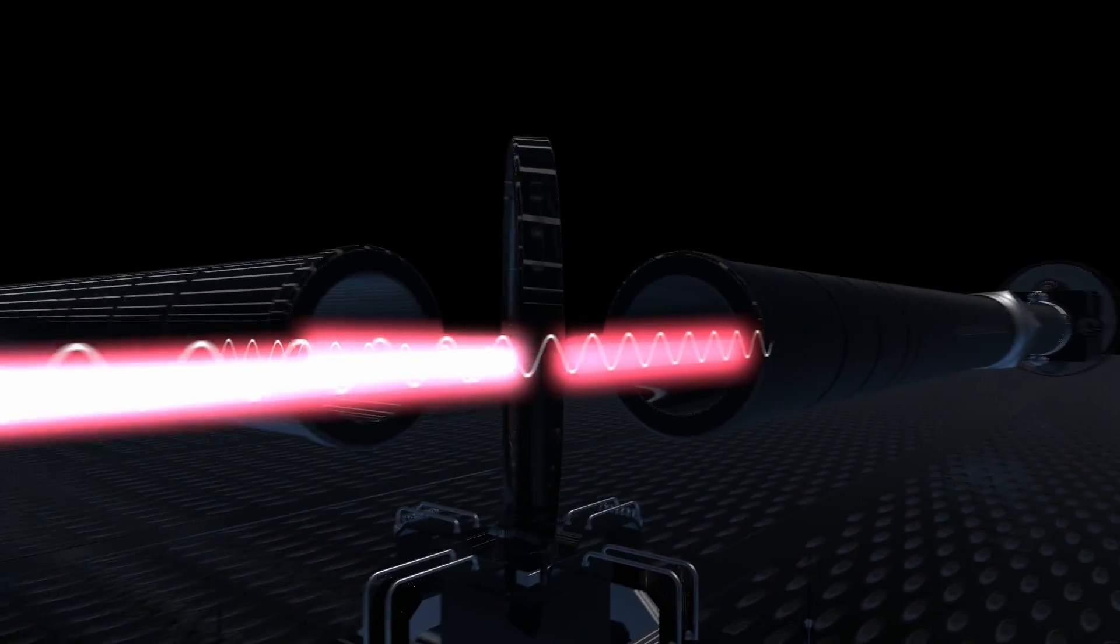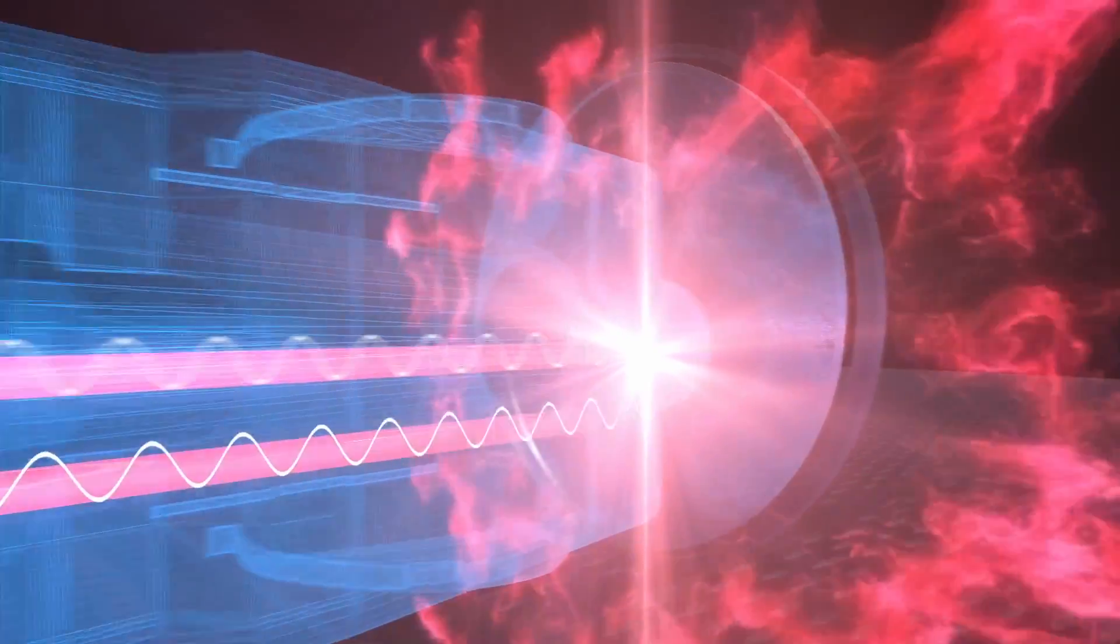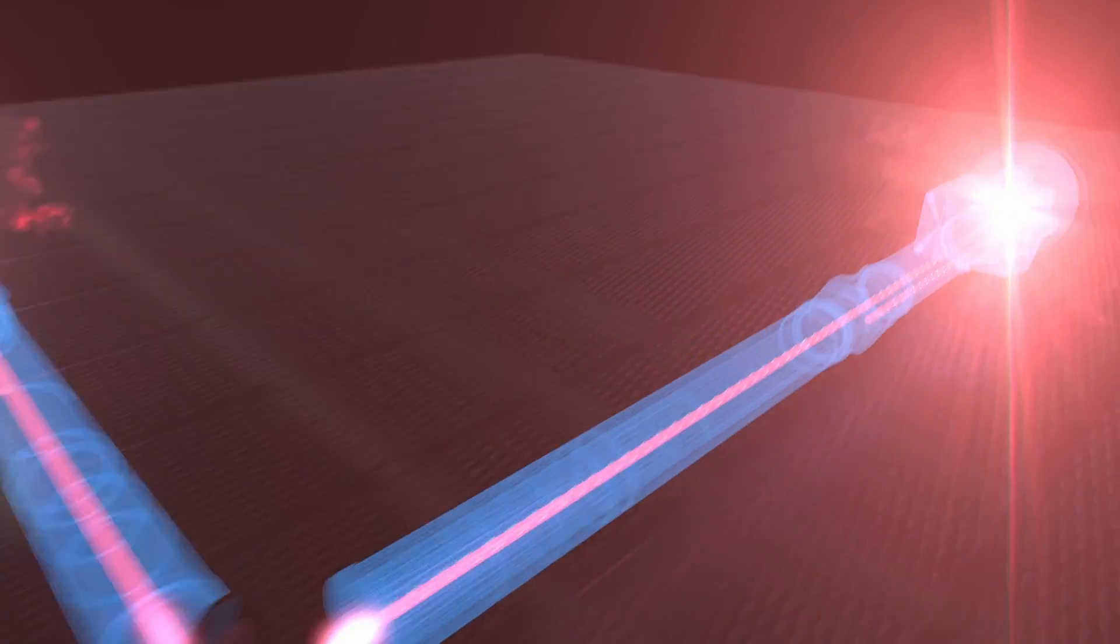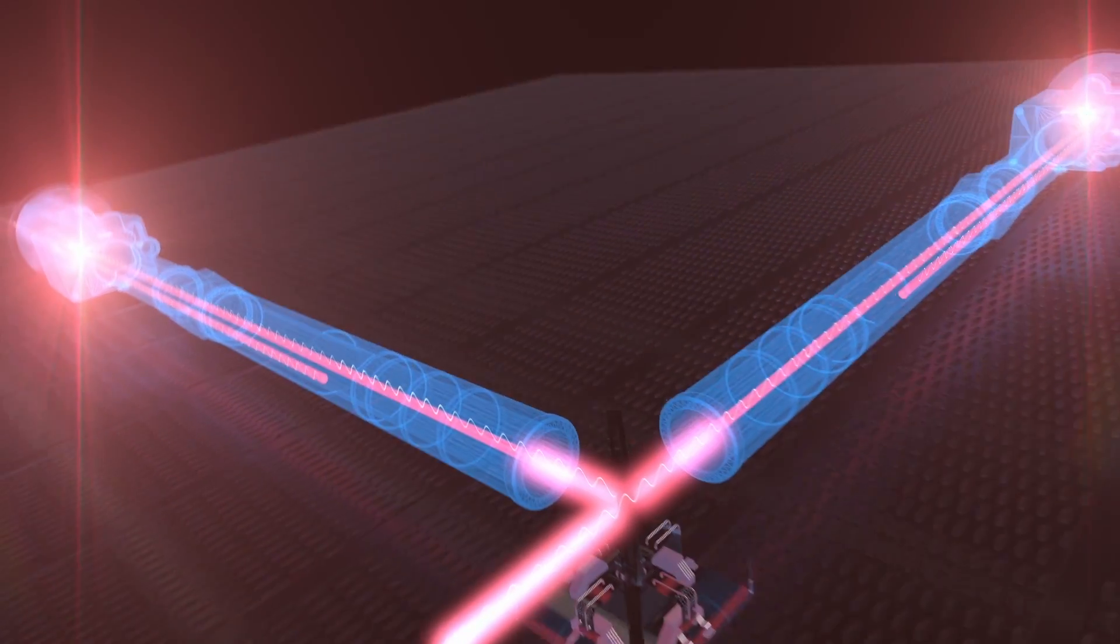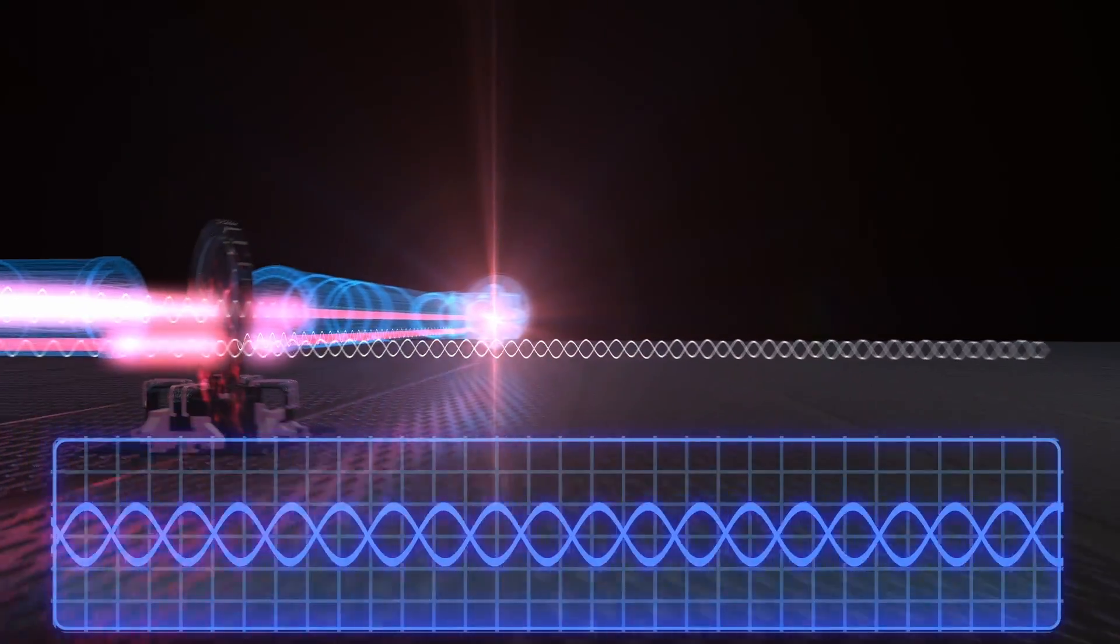One half of the laser beam goes down one vacuum tube, the other half goes down the other. They bounce off the mirrors at the end, and because both halves are traveling the exact same distance, they return to the crux at the same moment. Their wavelengths cancel each other out, and no light is emitted.